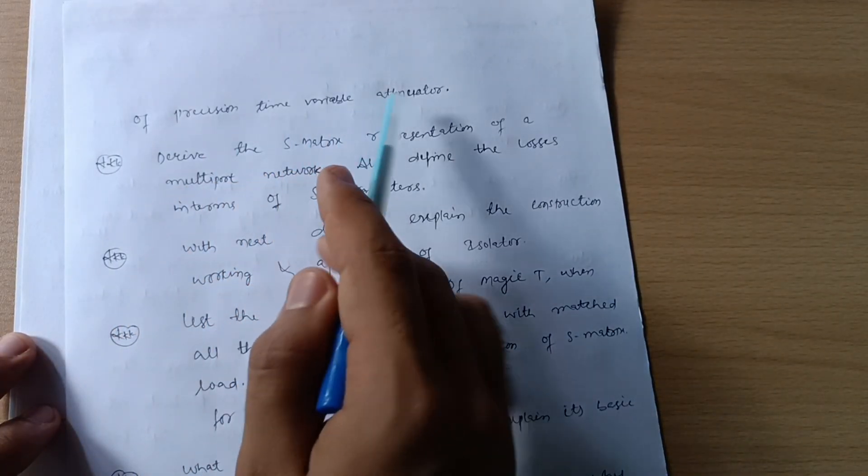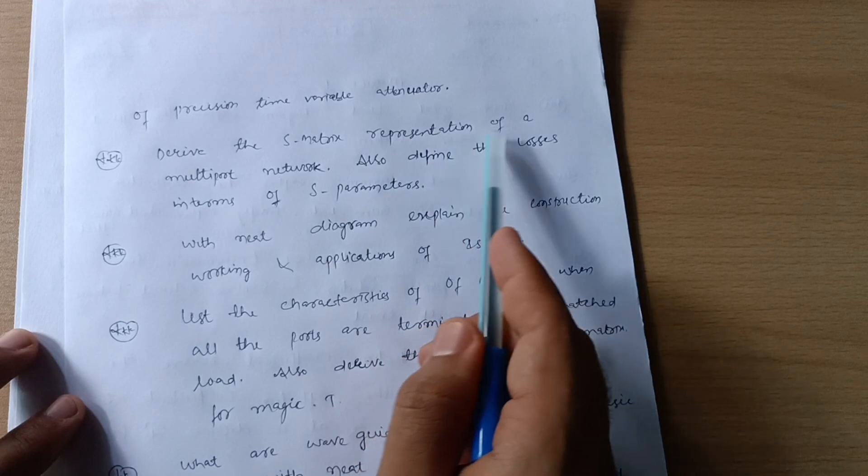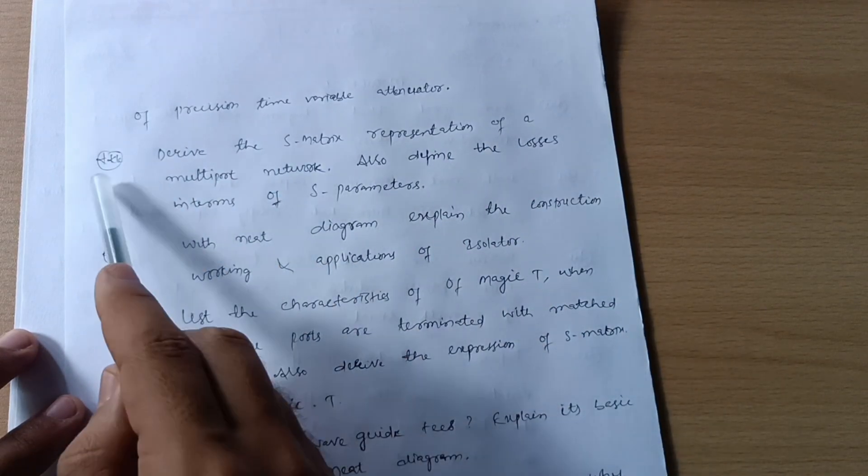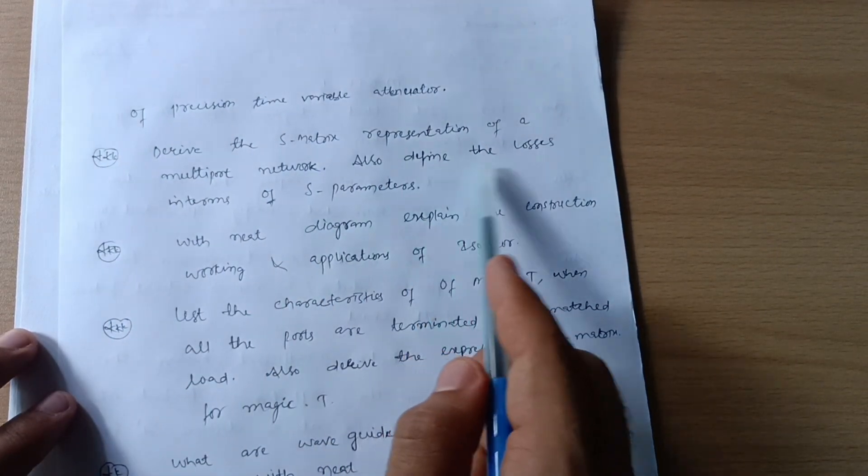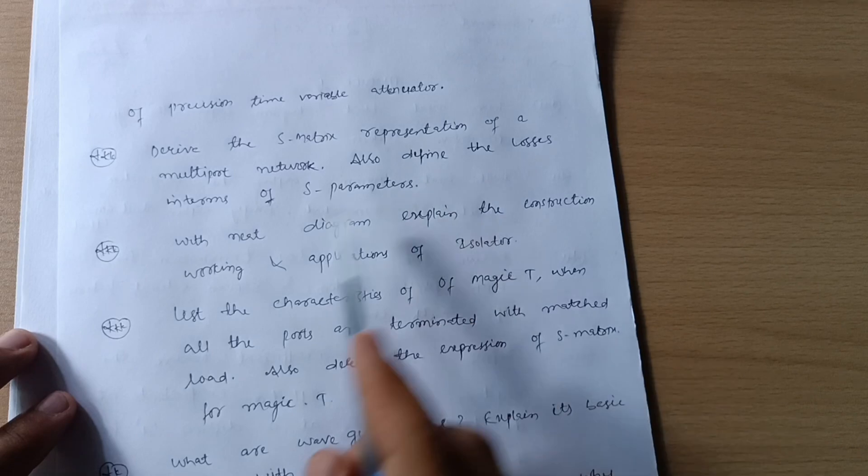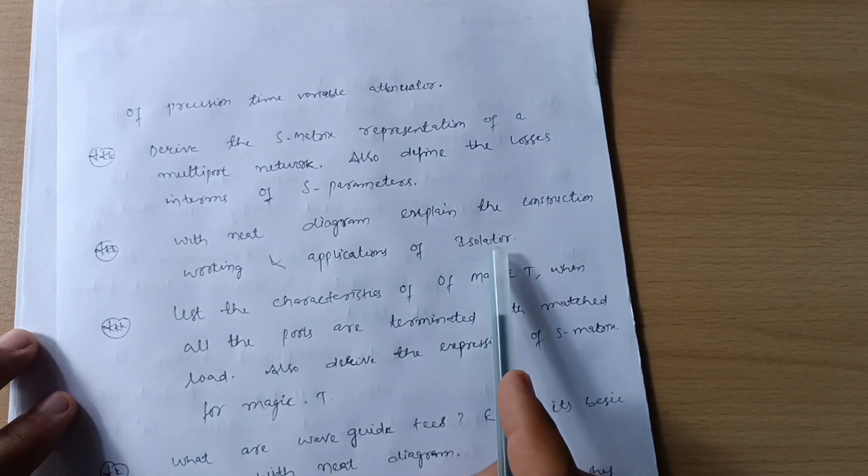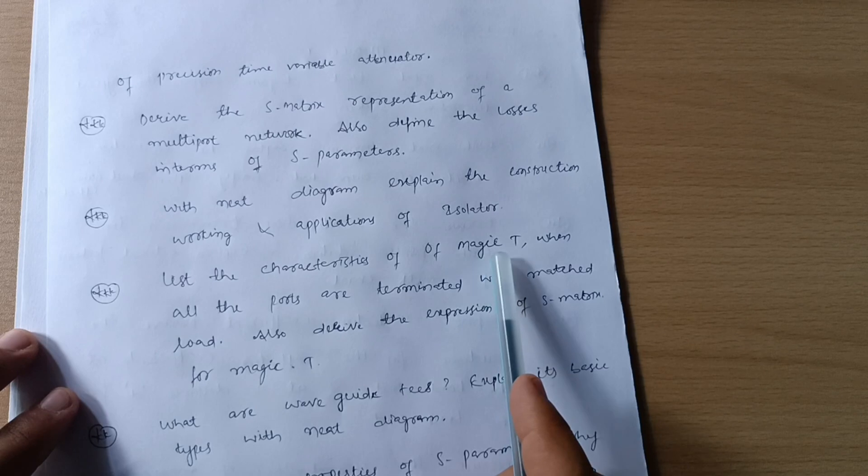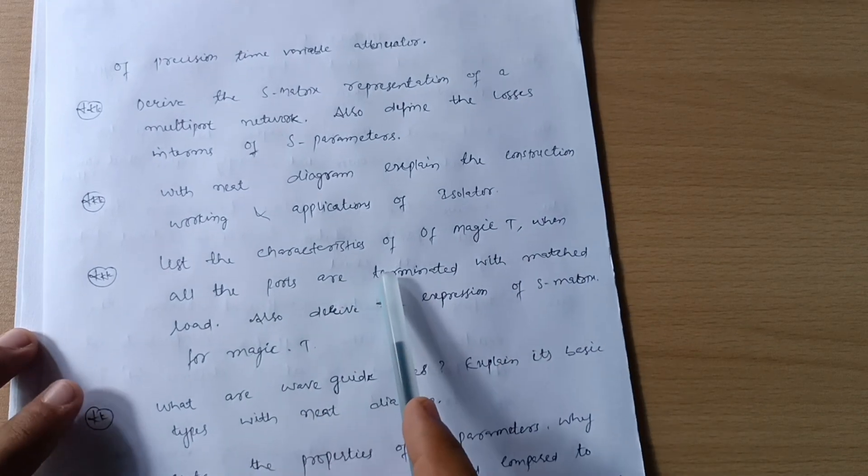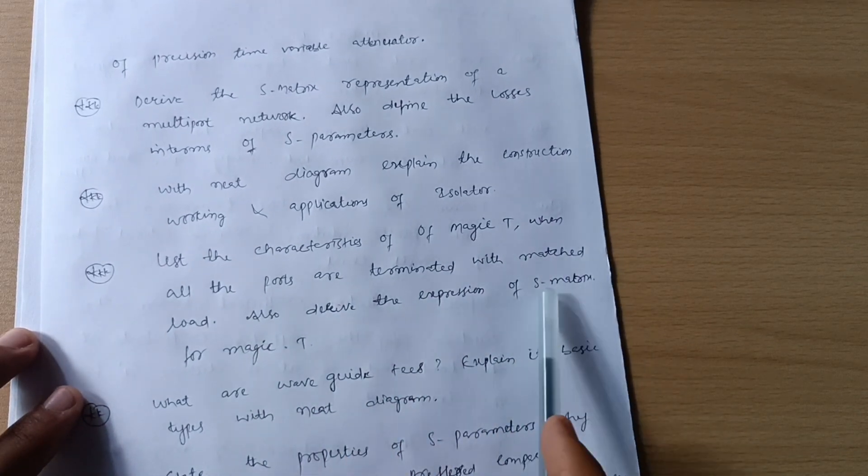Derive the S matrix representation of a multi-port network. This is a super important question. Also define the losses in terms of S parameters. With neat diagram explain the construction, working, and applications of isolator. List the characteristics of the magic T when all the ports are terminated with a matched load.